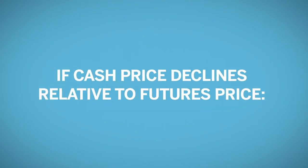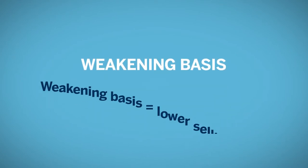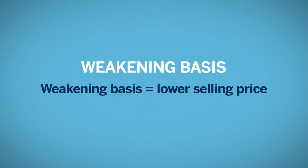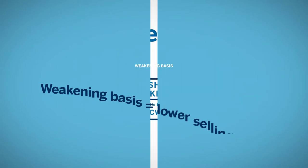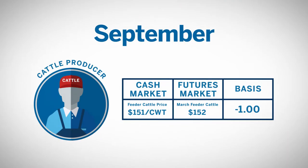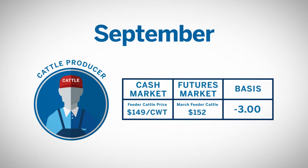If the cash market price decreases relative to the futures price, the basis is said to have weakened or gotten weaker. A basis that is weaker or more negative than expected decreases the selling price. Had the basis changed from $2 under to $3 under, the net selling price would be $149.